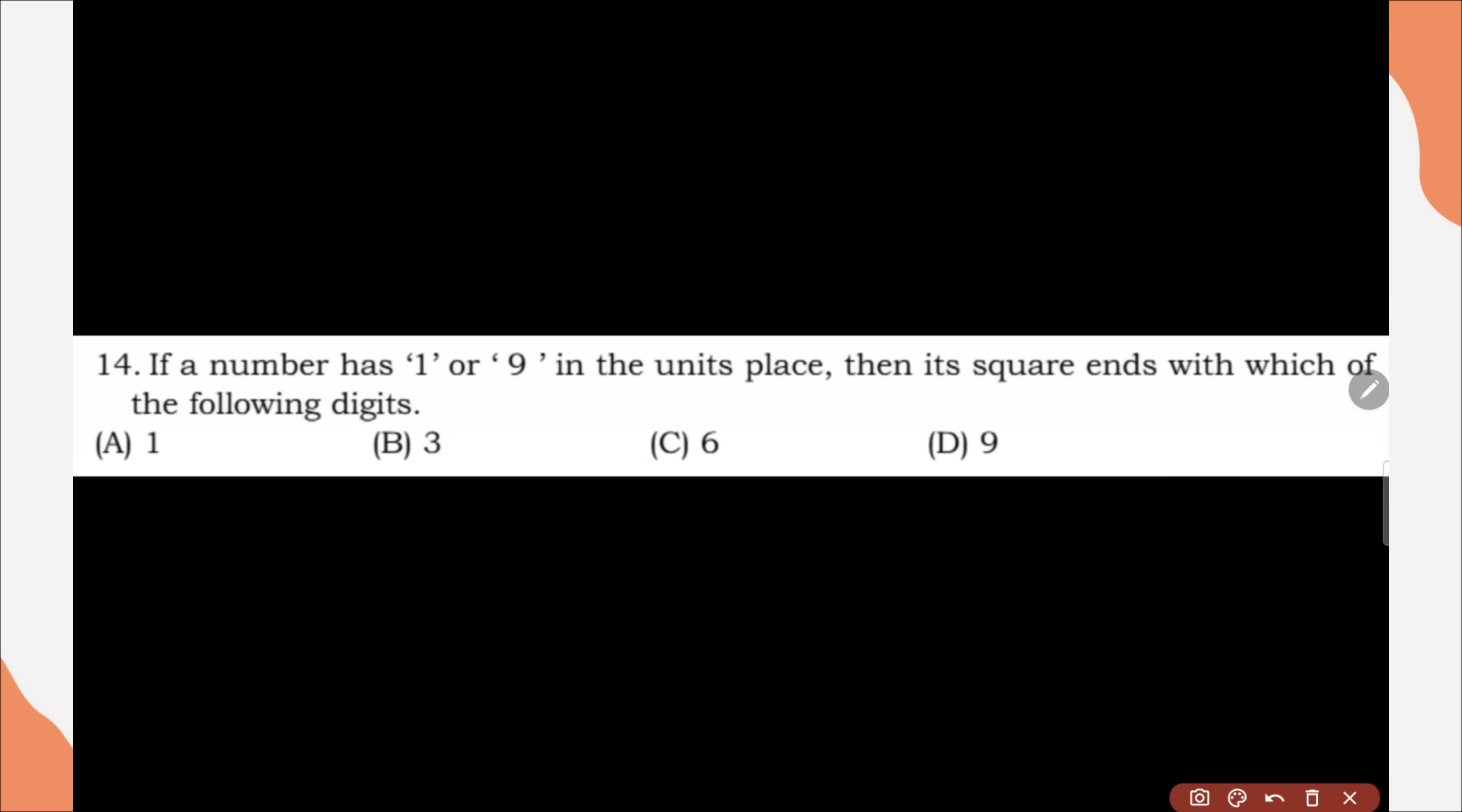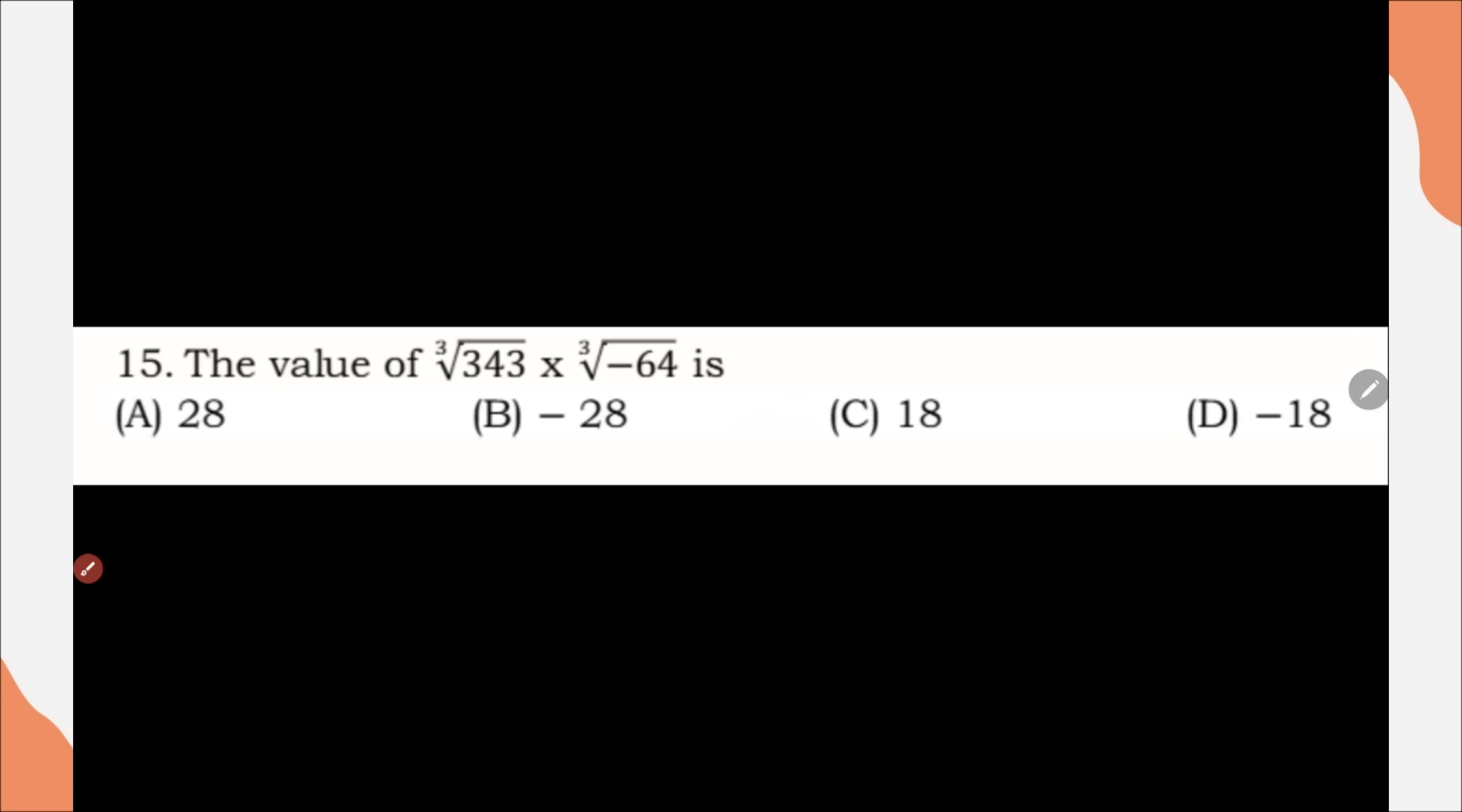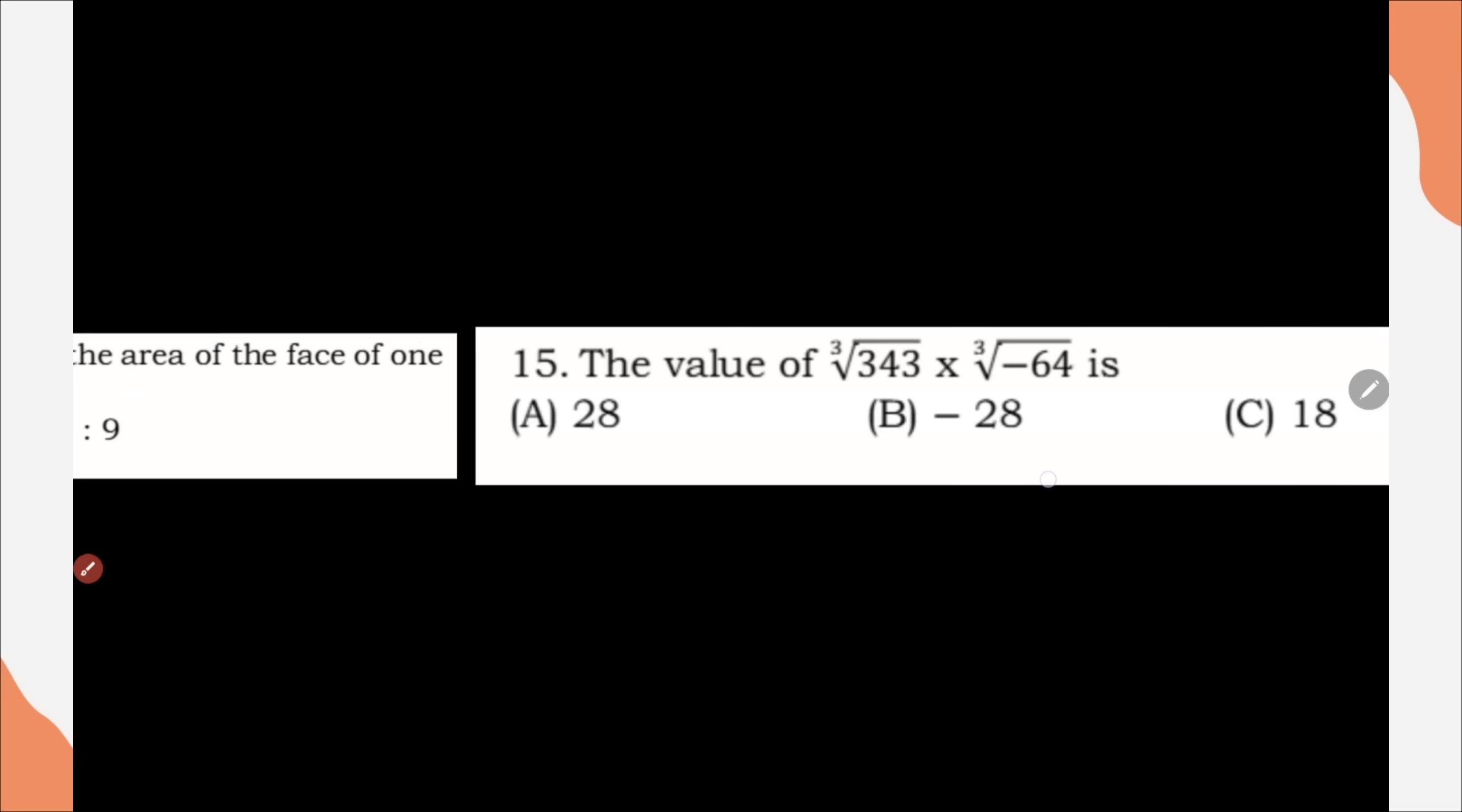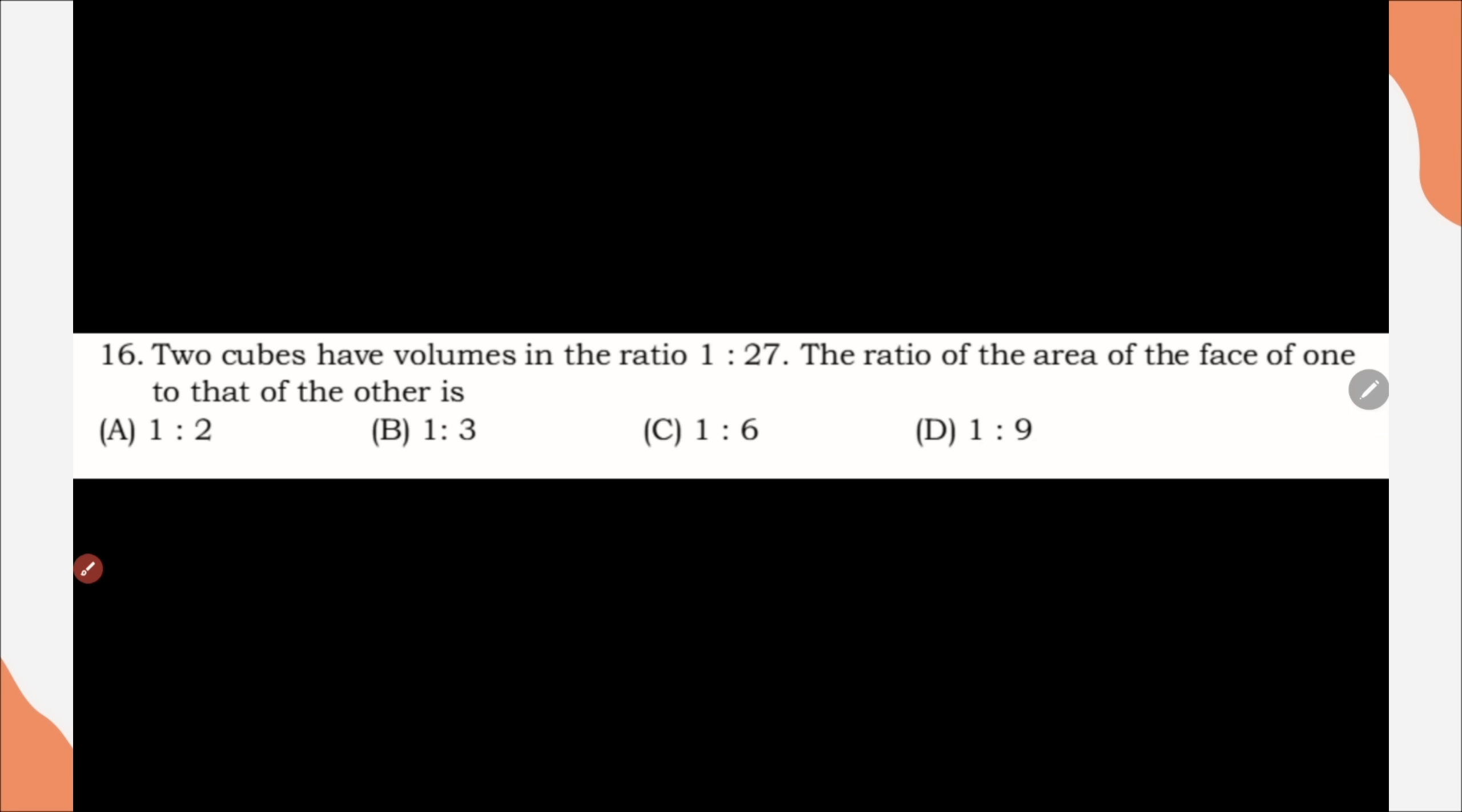Next, if a number has 1 or 9 in unit place, then it square ends with which of the following digit. Correct option is option A, 1. Question number 15, the value of this is, correct option is option B, minus 28. Question number 16, two cube have volume in ratio 1 is to 27. The ratio of area of face of one to that of other is, correct option is option D, 1 is to 9.